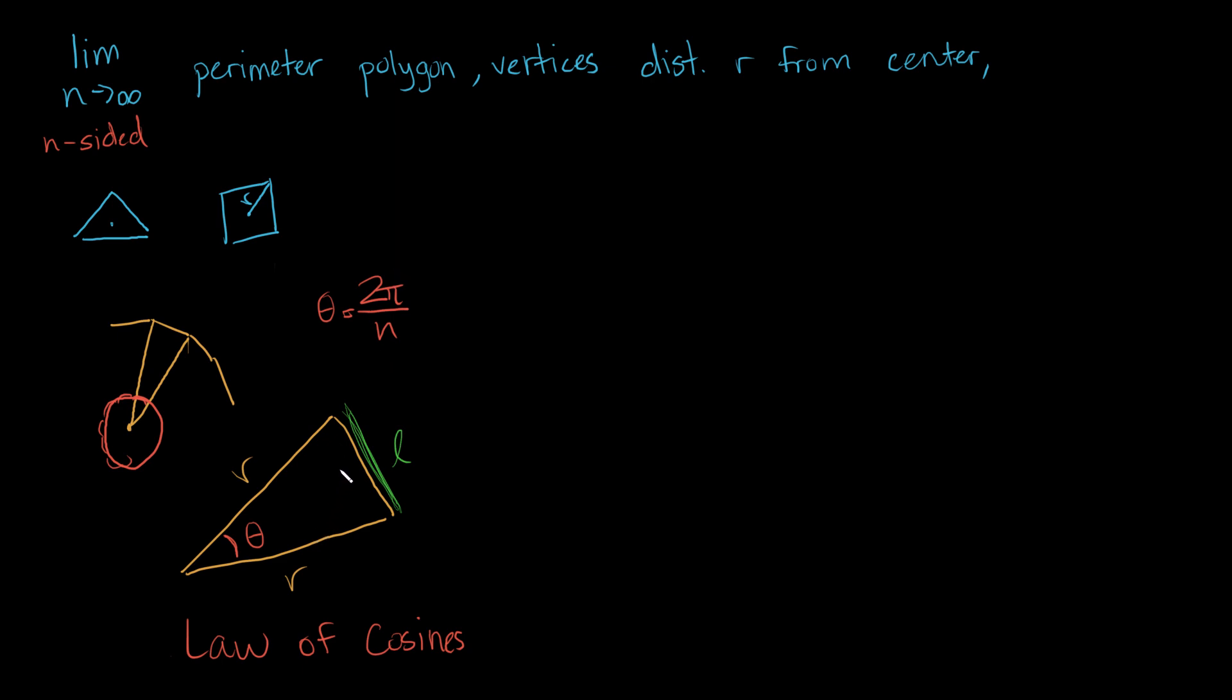Let's apply the law of cosines. The law of cosines says that the side opposite of the angle that we know, so l squared, is going to equal the other two sides, r squared plus r squared. This is the Pythagorean theorem, but because theta is a general angle, we need to do one more thing. We need to subtract 2 times r squared times the cosine of the angle opposite this l, which we have denoted with theta.